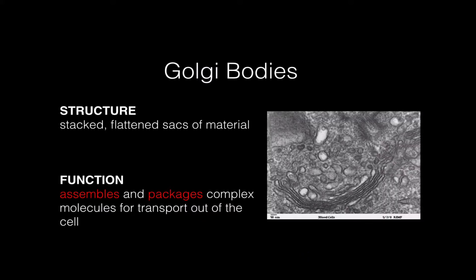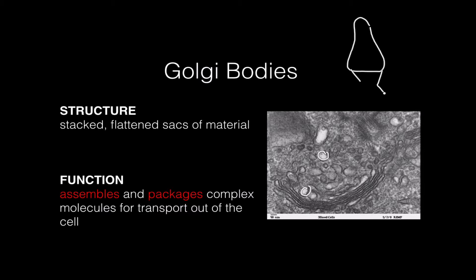Here's an electron microscope picture of a Golgi, and you can see it's made up of these flattened sacks that are kind of bubbling and oozing these vesicles. These sacks of material are called vesicles, and vesicles can attach to and migrate through and detach from all these layers. The Golgi body is a lot like a lava lamp — it kind of bubbles and oozes up and then falls back down, usually in bright colors.